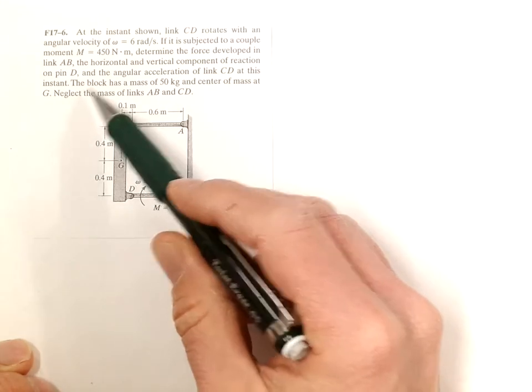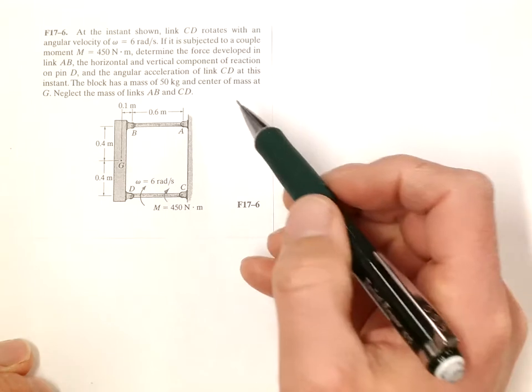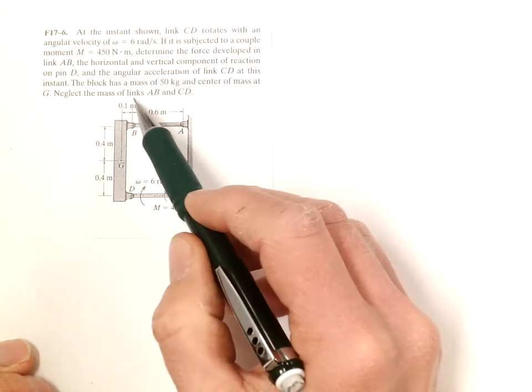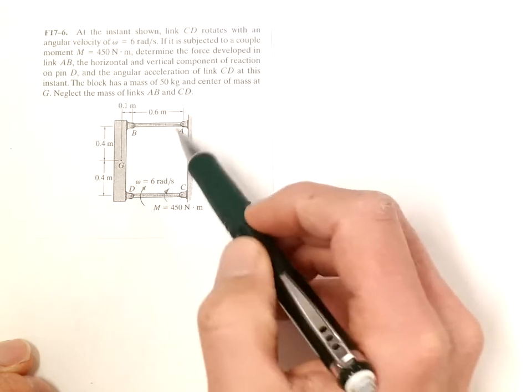At this instance the block has a mass of 50 kilograms, the center of mass at G, neglect the mass of links AB and CD.